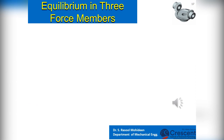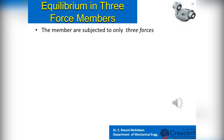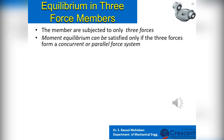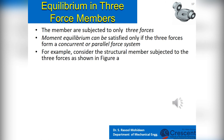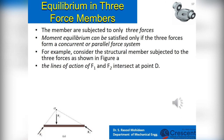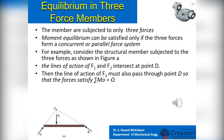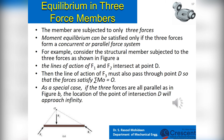Here we have a mechanical object acted upon by three forces. Moment equilibrium can be satisfied only if the three forces form a concurrent system of forces. Consider the structural member subjected to three forces as shown in Figure A. The lines of action of F1 and F2 intersect at point D; then the line of action of F3 must also pass through point D, so that the forces are concurrent and satisfy the condition that the summation of moments around O equals zero. As a special case, if the three forces are all parallel as in Figure B, the location of the intersection point D will approach infinity.